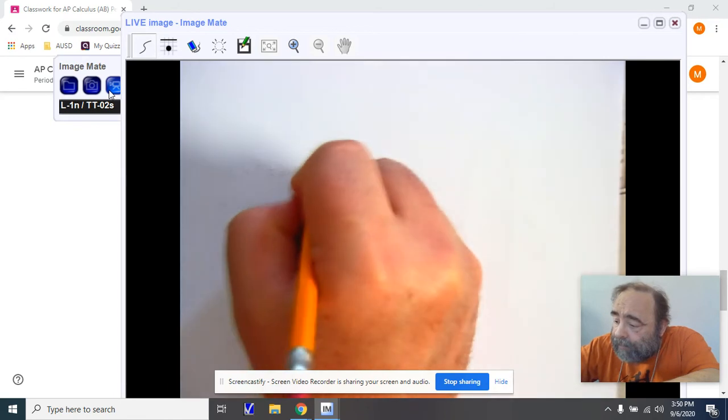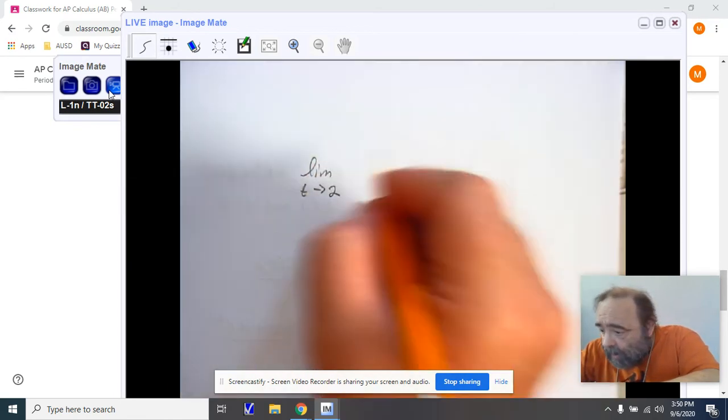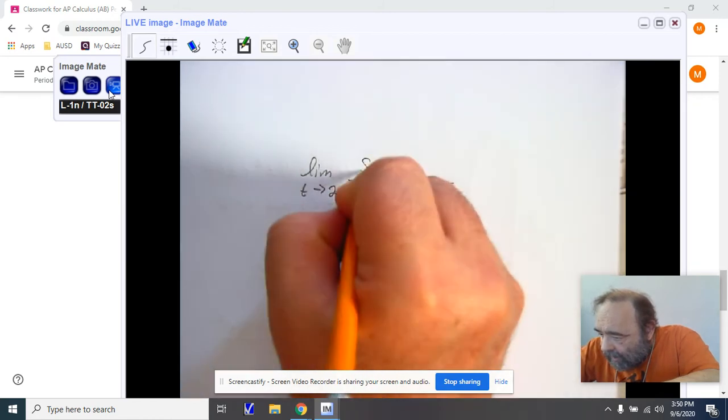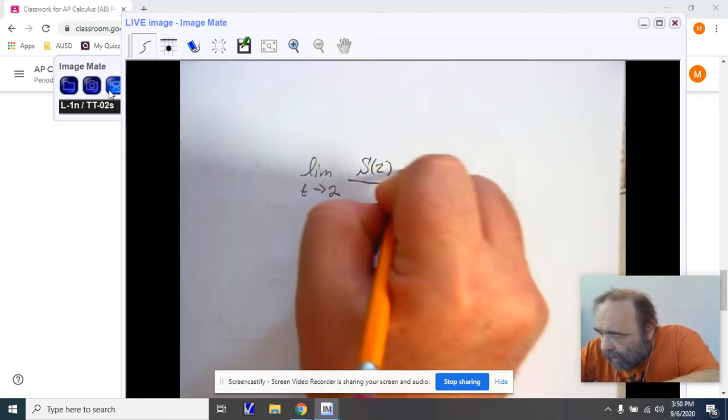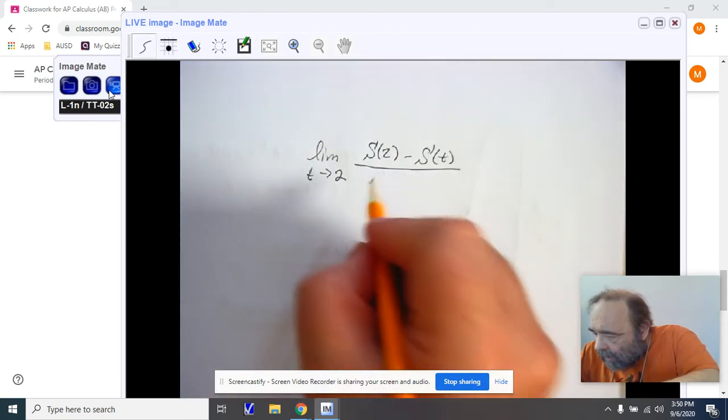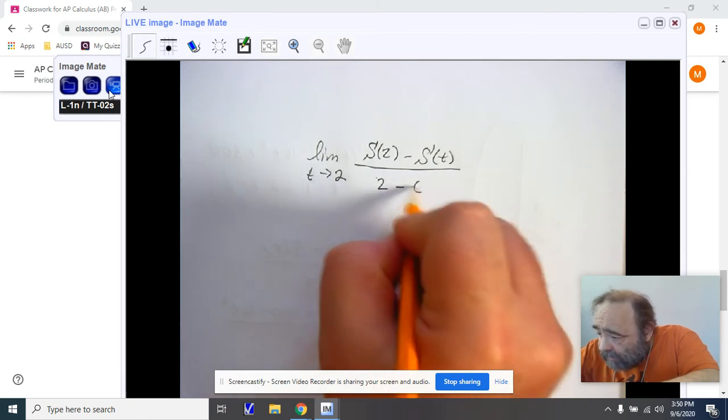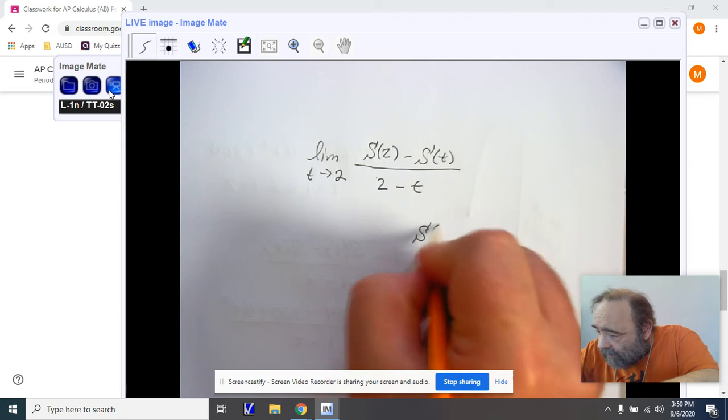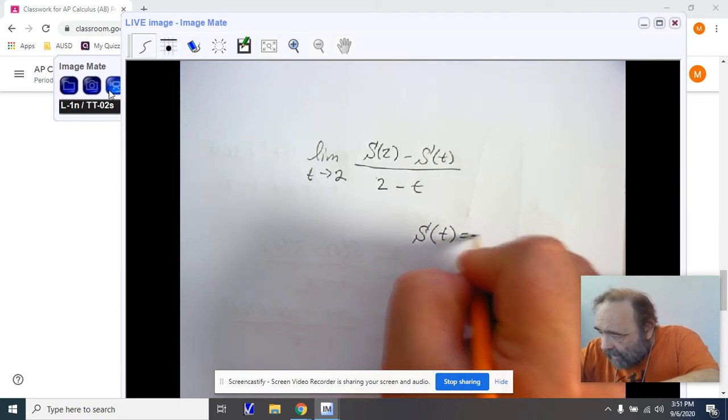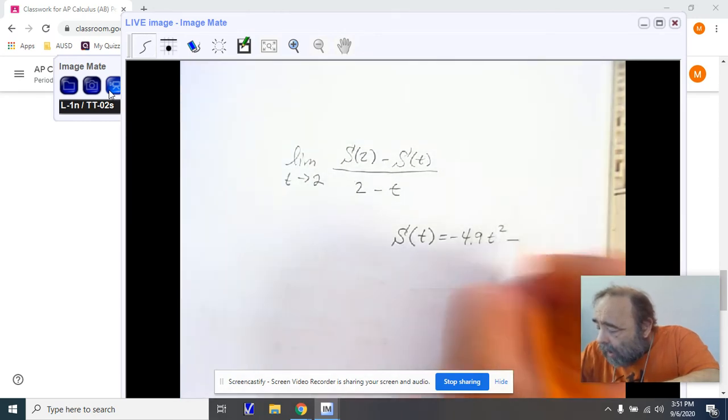So, I'm still looking at the limit as t, let's go ahead and approach two this time. That was our second option. We're looking at s(2) minus s(t) divided by 2 minus t. We're working with s(t) is negative 4.9t squared.